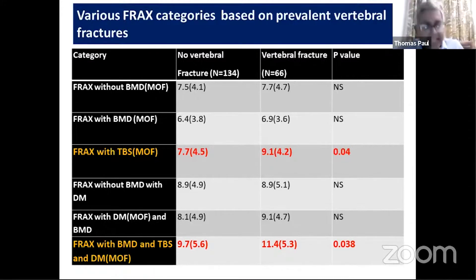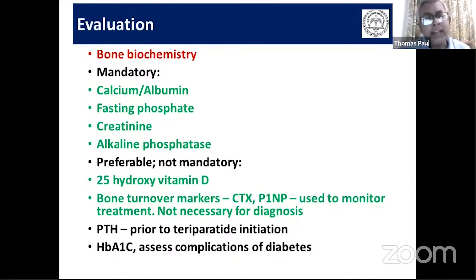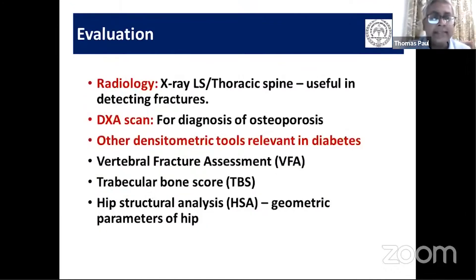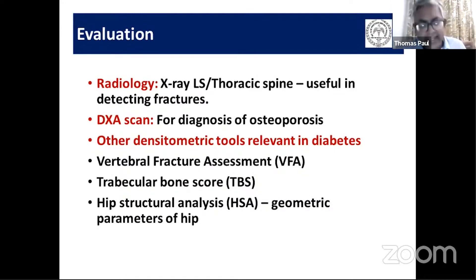For evaluation, at minimum assess calcium, phosphorus, albumin, and creatinine; assess renal and glycemic control. For radiology, in many cases of diabetes preferably obtain a lateral spine X-ray in addition to DEXA. If VFA is available on the DEXA, please do it — we may miss a fracture. If trabecular bone score is available, please do it. Hip geometry is an experimental tool available in recent DEXA models with HSA to assess various parameters of hip geometry.